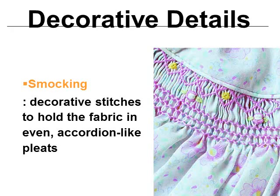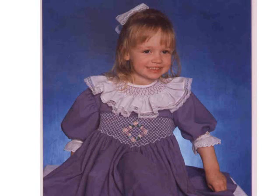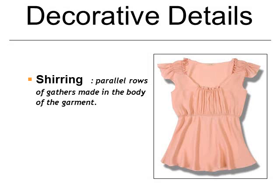Smocking is decorative stitching that holds fabric in accordion-like pleats, almost pinched straight up in the air. This picture has a lot of design details: ruffles, gathering, embroidery, some fagoting around the neckline, and smocking. Shirring is parallel rows of gathers made in the body of the garment.